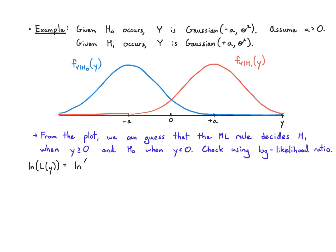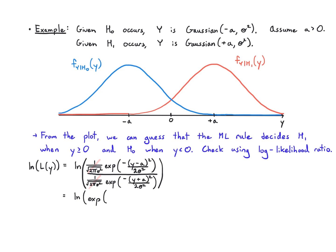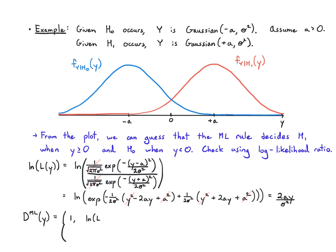Let's verify using the log likelihood ratio. Plugging in the Gaussian PDFs: the top is (1/√(2πσ²)) exp(−(y−a)²/(2σ²)) and the bottom has mean minus a, giving a plus in the exponent. After expanding and canceling, from y² minus 2ay plus a² and y² plus 2ay plus a², the y² and a² terms cancel, leaving only the 2ay cross terms. So the log likelihood ratio simplifies to 2ay over sigma squared.